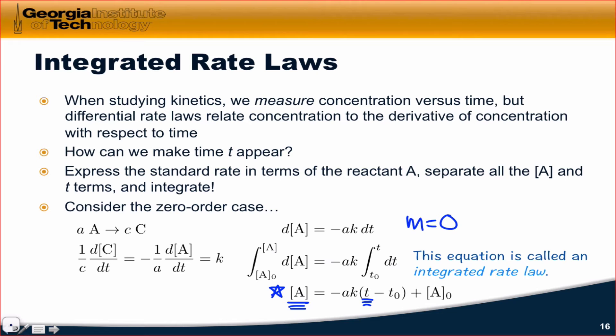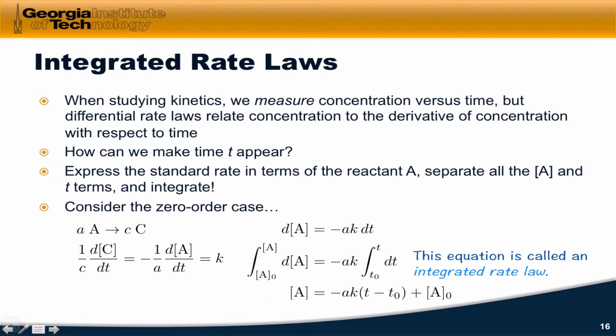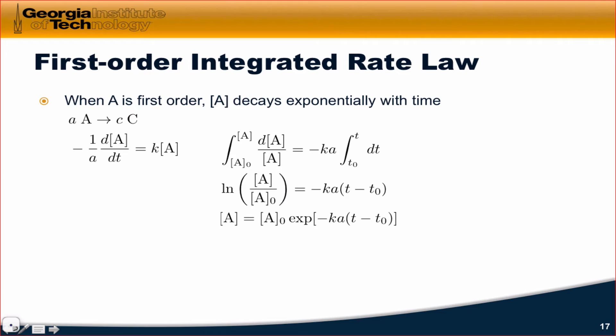When A is first-order, we find that the molarity of A decays exponentially with time, which is another picture that we've seen. We now have a factor of A to the first power instead of A to the zero power there. And we're going to go through the same process of bringing T to the other side by multiplying both sides by DT and then integrating both sides.